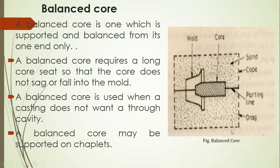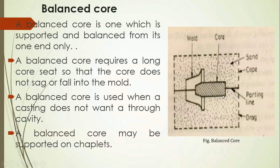Chaplets are metal pieces placed inside the mold cavity to support the core. The chaplet should be made of the same metal as the metal to be cast — such as aluminum, brass, bronze, stainless steel, mild steel, or cast iron. That is the function of the chaplet: to support the core inside the mold cavity. Outside the mold cavity, the core is supported using a core seat, and that core seat is made using a core print which is attached to the body of the pattern during ramming.